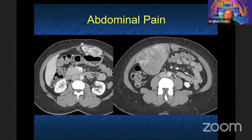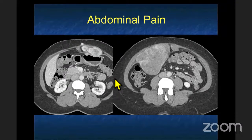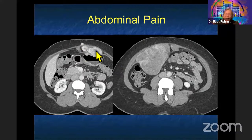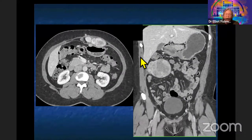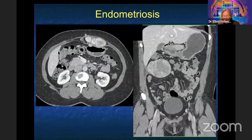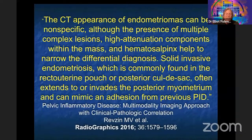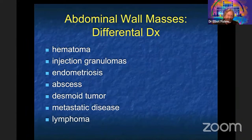Next case: 30-ish year old female with abdominal pain. More than 95% said desmoid; one said endometriosis. There are masses in the rectus muscle — enhancing masses. Multiple enhancing masses in the abdominal wall: I think about desmoid tumors, sarcomas, but endometriosis gives you enhancing lesions, typically in patients who've had prior C-sections or prior surgeries. There's a wide differential for abdominal wall masses, but endometriosis is one of them — a great diagnosis to make.